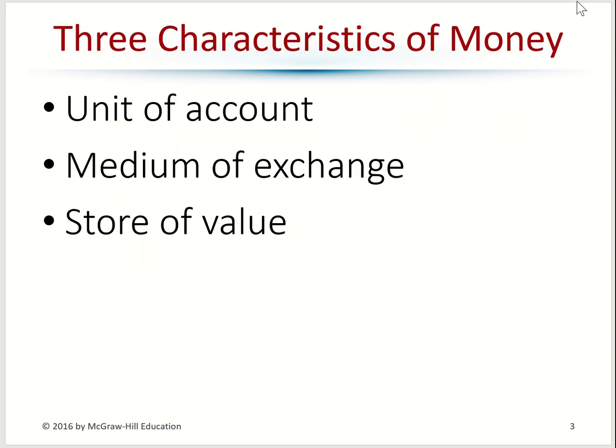There are three characteristics for money. They are called unit of account, medium of exchange, and store of value. Unit of account is when you can use your money to measure the value of something else. For example, a computer might be worth maybe 1,000 bottles of water, and that bottle of water can be used as a unit of account to measure the value of the computer.